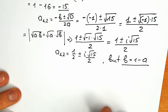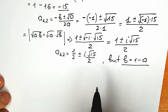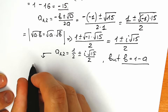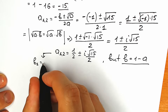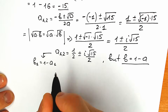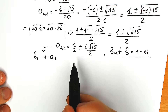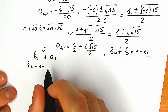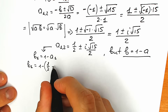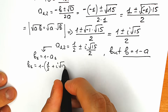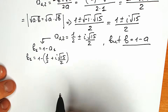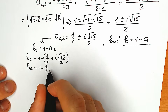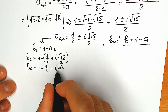We have a; now we need to find b. Recall that b equals 1 minus a. Let's find b₁ and b₂. For b₁, using a₁ with the positive sign: b₁ equals 1 minus one-half plus i times square root of 15 over 2. Simplifying: b₁ equals 1 minus one-half minus i times square root of 15 over 2.